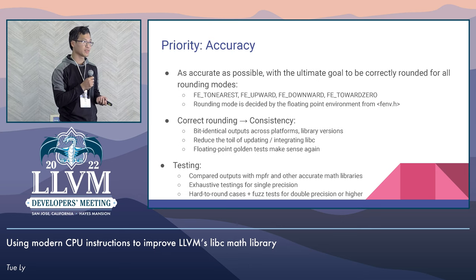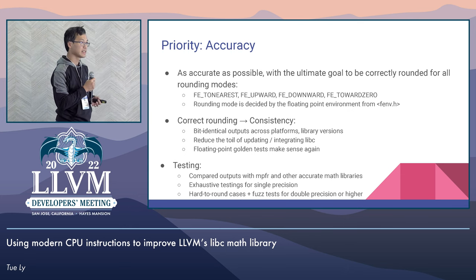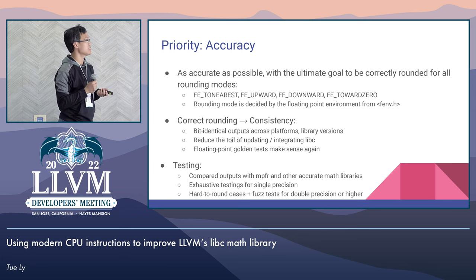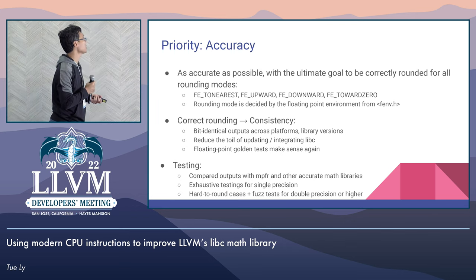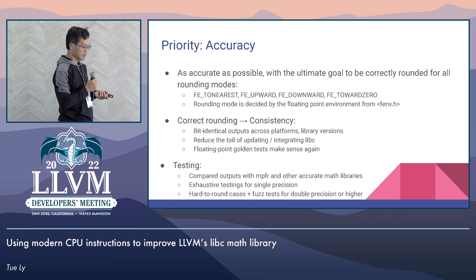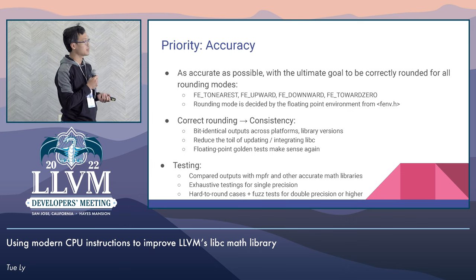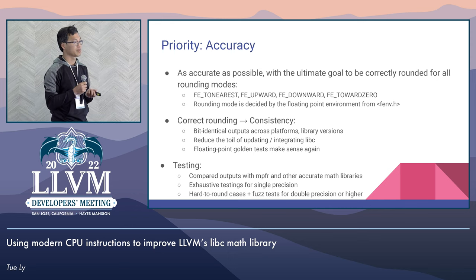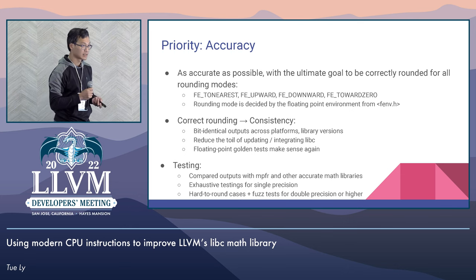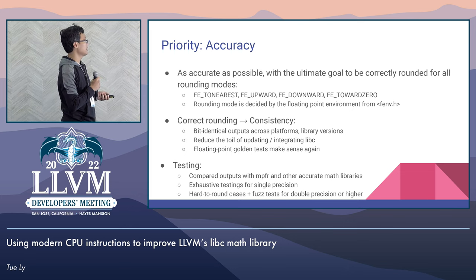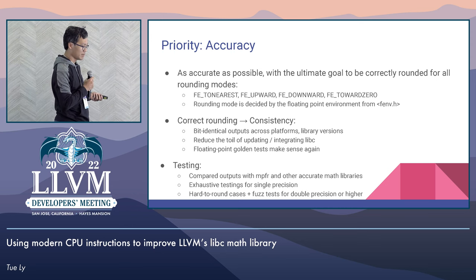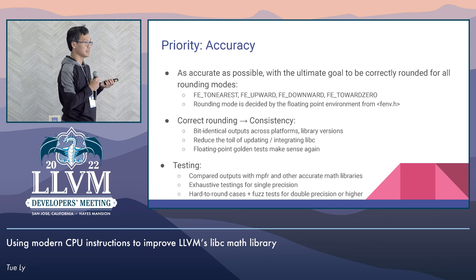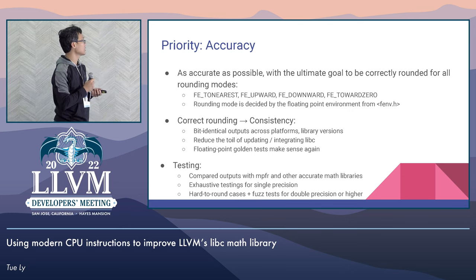Our highest priority for implementing the math functions is accuracy. We want to be as accurate as possible. The ultimate goal is to make all functions correctly rounded with respect to all rounding modes. The rounding mode is decided by the floating-point environment from the fenv header. One of the biggest benefits of correctly rounded functions is that they are going to be consistent — the results are bit-identical and well-defined across platforms.